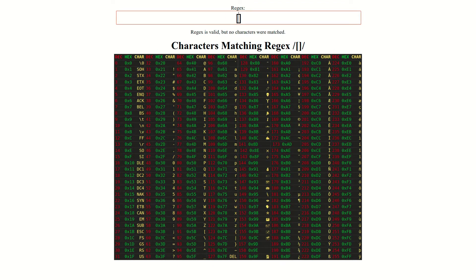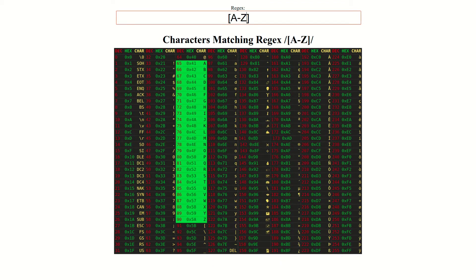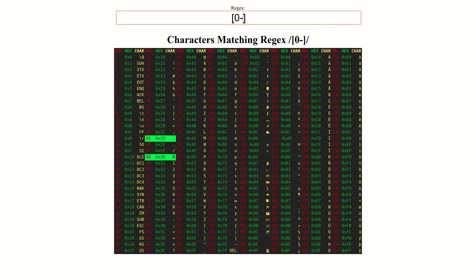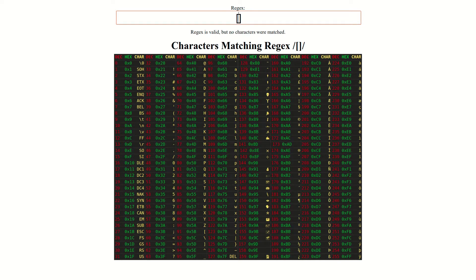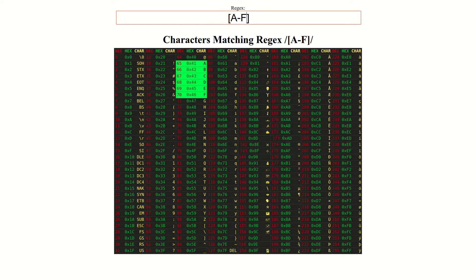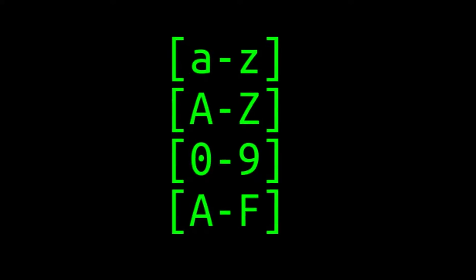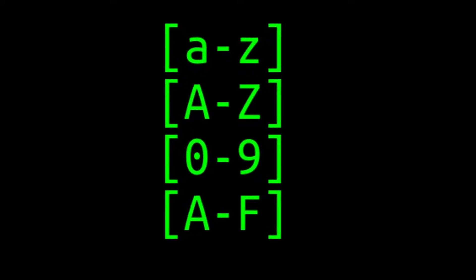Some other common examples of character ranges include matching all uppercase letters, matching all number digits, or matching only part of the alphabet, such as characters A to F. You're not just limited to these fairly common character ranges either.